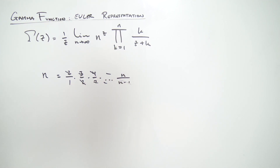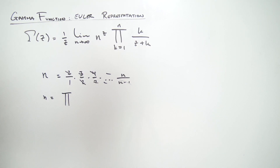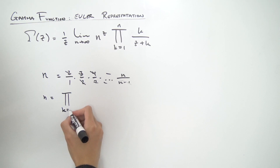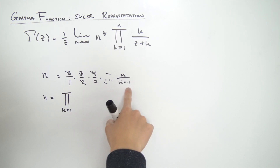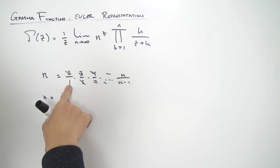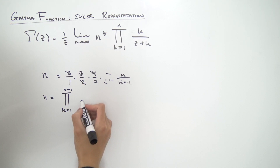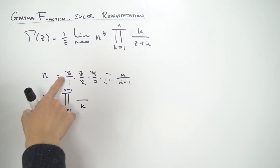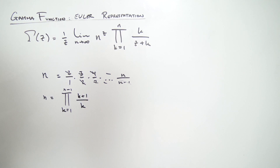We can turn this into a product. So n is now equal to a product with index k running from 1. Looking at the denominator to figure out where k ends — k runs from 1 up to n−1. On the denominator we have k, and on top the value is just k+1. So the product is (k+1)/k.